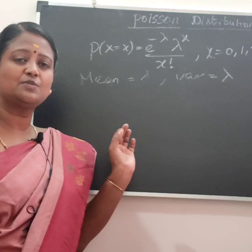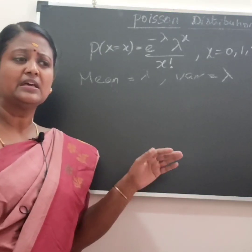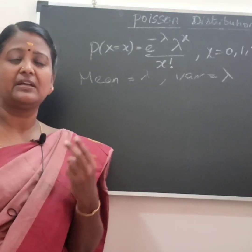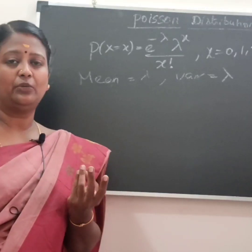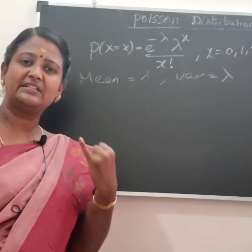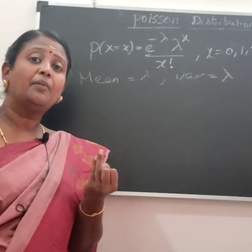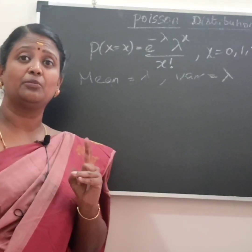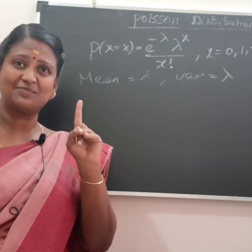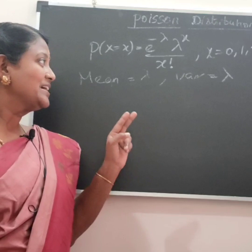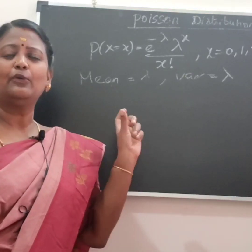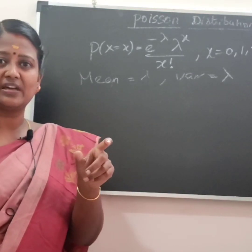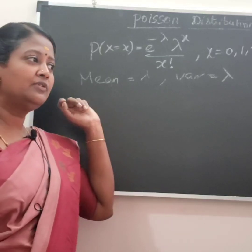Poisson distribution is very simple. Even in Binomial, there are two parameters: n and probability — the number of trials and probability of success. But in Poisson, we don't have that; there is only one parameter, lambda, and we can do the full distribution.